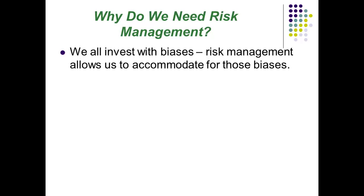We all have biases. Some of these biases are personal — biases we've developed over our lifetimes. But some of these biases are actually cognitive biases that are across all humans, or across all of a certain sex. For example, testosterone makes people trade more frequently. Studies have shown that a man trades usually 45% more often than a woman.